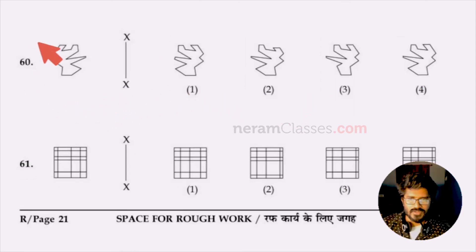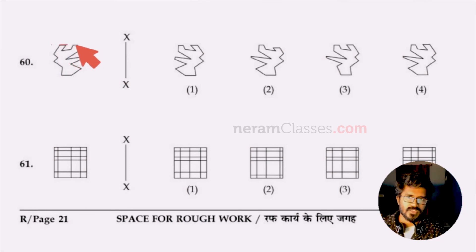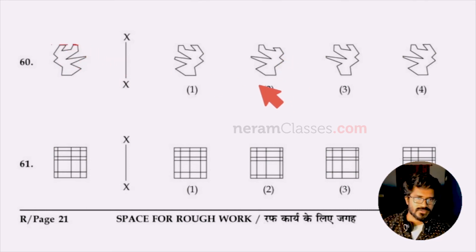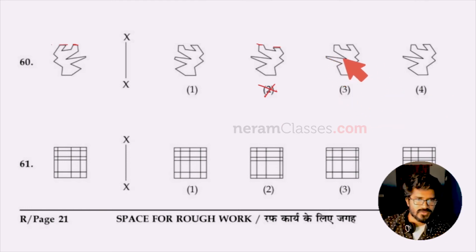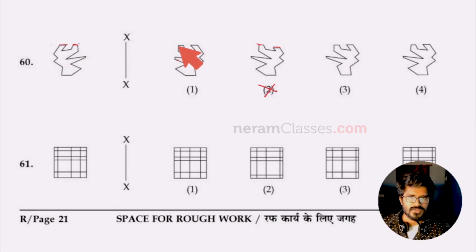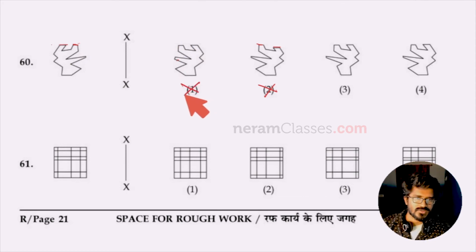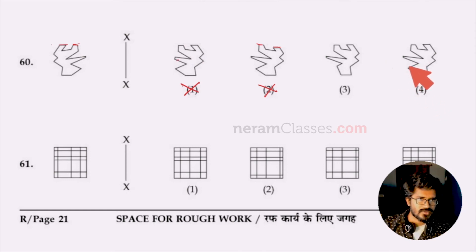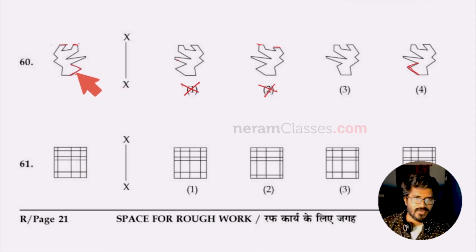Question 60: find the correct mirror image. Option two is wrong because two lines that are aligned straight in the original are not straight in option two. Option one is wrong because the shape appears more elongated. Comparing three and four: option three's edge is sharper than the original, and option four's sharpness matches. Option three is wrong and option four is the right answer.